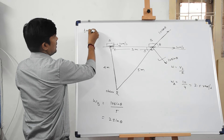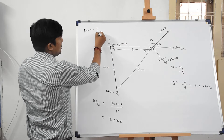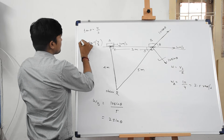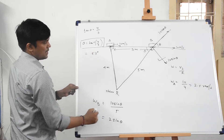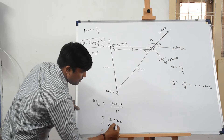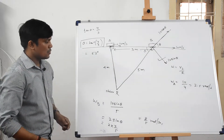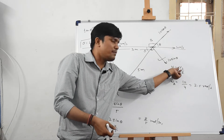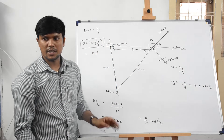To find theta: tan(theta) = opposite/adjacent = 4/3, so theta = arctan(4/3) = 53°. Therefore omega at point B = 10·sin(53°) / 5 = 2 × (4/5) = 8/5 radians per second. The key concept is that we cannot directly use v/r; we must use v_perpendicular/r, where v_perpendicular is the component of velocity perpendicular to the radius vector.